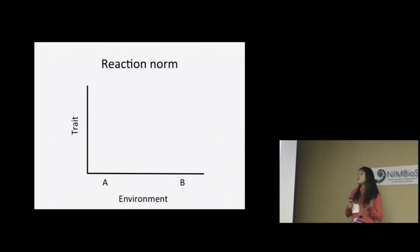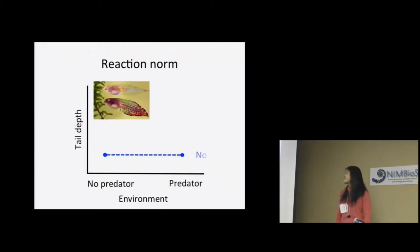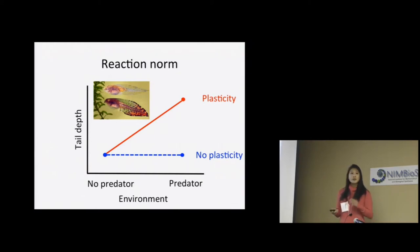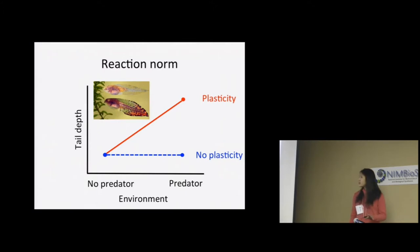To visualize phenotypic plasticity, we typically use reaction norm lines. On the x-axis you have different environments, and on the y-axis you have the trait of interest. In our tadpole example, if we don't expect to see plasticity, we should see a flat reaction norm line — it doesn't matter what environment the tadpole is in, the tail depth will be the same. In contrast, if we do expect plasticity, we should see a slope in the predator versus no-predator environment. A sloped reaction norm line indicates plasticity; a flat line indicates no plasticity. The key point is that plasticity allows individuals to induce an adaptive phenotype within a single generation.